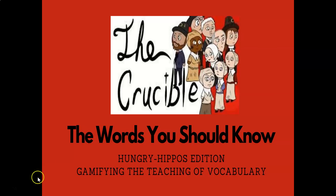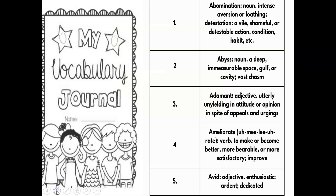One thing my students do as they read is keep a vocabulary journal. My rule is: if you come upon a word you don't know, underline it and put it in your vocabulary journal. With The Crucible, I've identified — after teaching it for 20 years — a total of 40 words that I feel a typical junior does not know. In the journal, I want students to write down the word, the part of speech, the definition, and then use it properly in context.